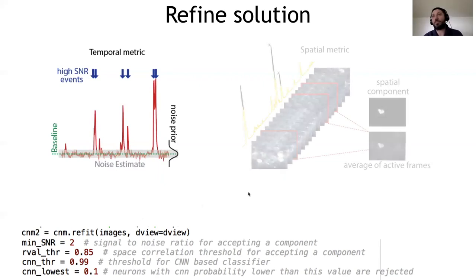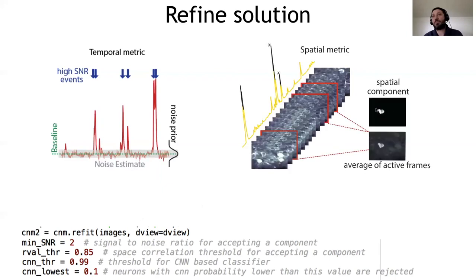We are checking how similar is a spatial component extracted from the algorithm to the neuron that is in the field of view. To achieve this, we only average the frames in the movie during which the neuron is active. If we do this properly, we should have something dark all over the place, except where the neuron is. And then we can cut a little corner here and then compute the correlation between these two. If the correlation is high, then it means that most likely we got a neuron. Instead, if this is noise, the correlation by definition would be zero. And the threshold on the correlation between minus one and one is this one 0.85.